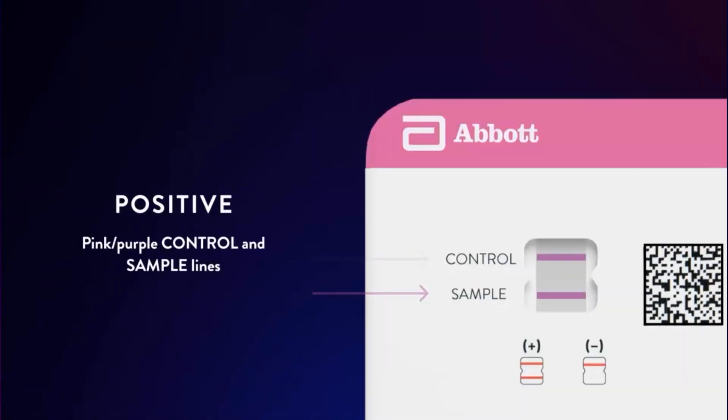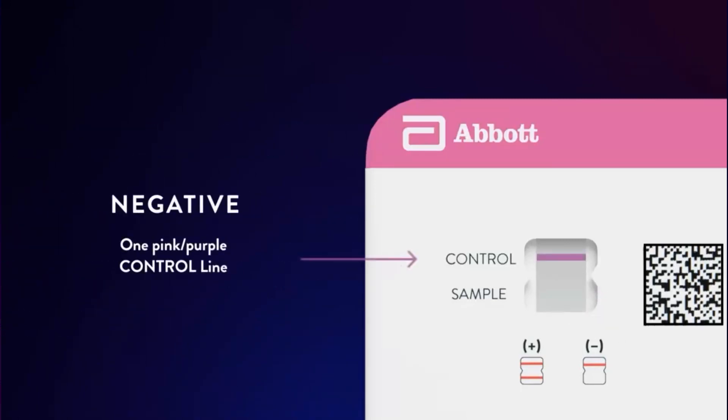You can read the results of the test here in the window on the front of the card. Two lines on that card will show a positive test. A single line or the control line that you can see there means it's negative.